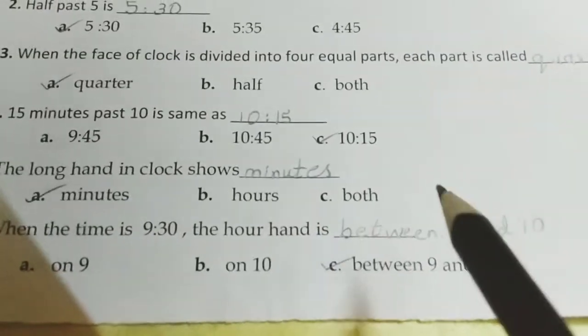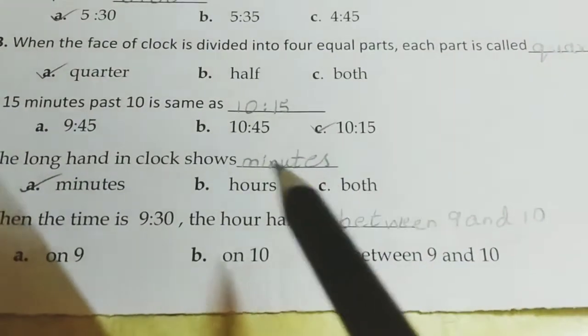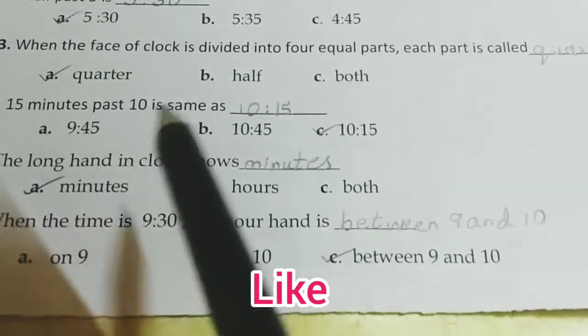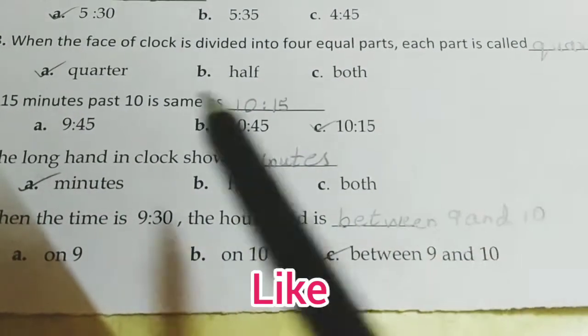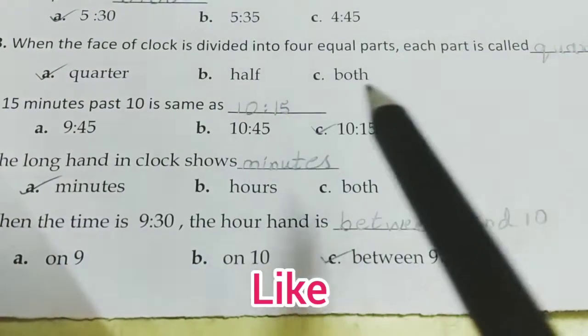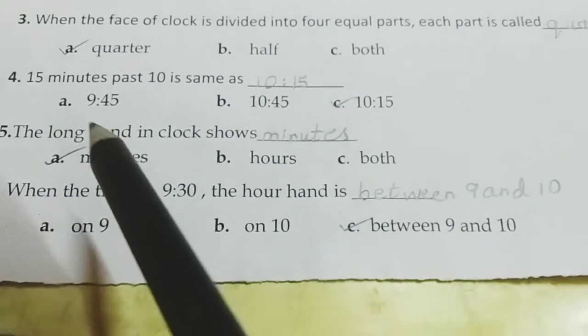4 equal parts. When we divide the clock into 4 equal parts, that is one part is called as quarter. Each part is called as quarter. Next.